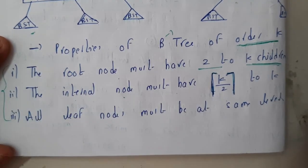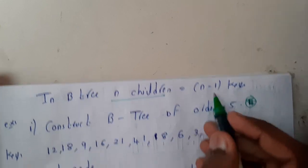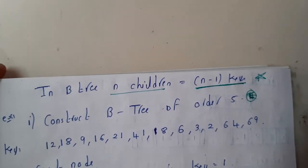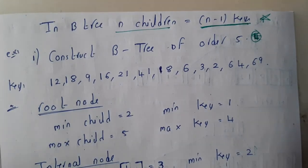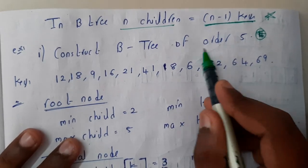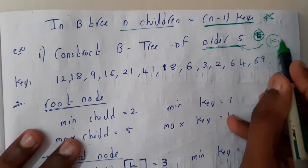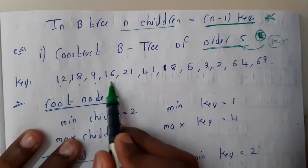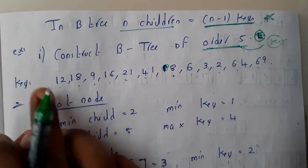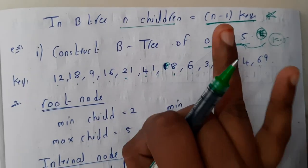All leaf nodes must be at the same level. There is one more key thing: in B-tree or B+ tree, if we are having n children, we will be having n minus 1 keys. You should remember this because this is the concept of both B and B+ tree. Once we go through the example I will be recollecting these steps. So let us take the example: construct a B-tree of order 5. The order is denoted with k, so k equals 5. The keys given are: 12, 18, 9, 16, 21, 41, 8, 6, 3, 2, 64, 69.